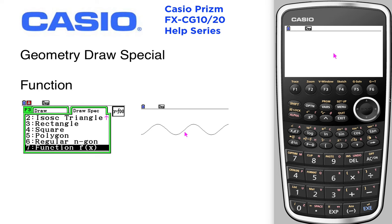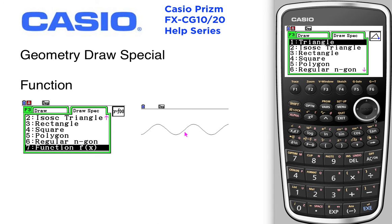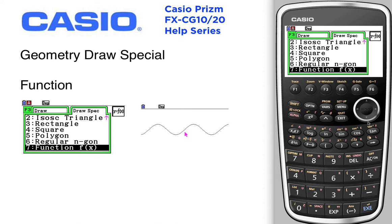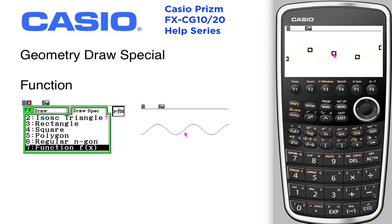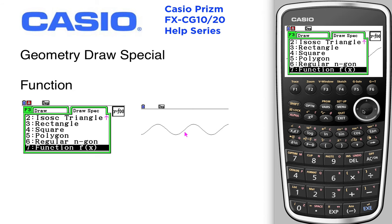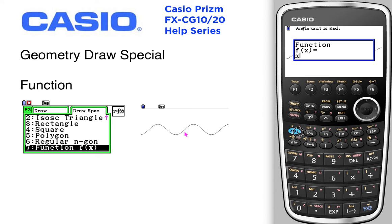To create functions in geometry, go into F3, draw special, going all the way down to the bottom which is number seven — function. Functions in terms of X, press execute. Function in terms of X, we'll go sine of X, and we get the sine function right underneath there.